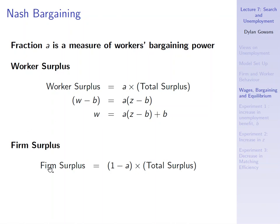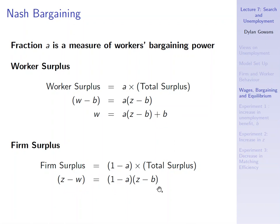For the firm surplus, it has to equal 1 minus A of total surplus, so Z minus W equals (1 minus A) times (Z minus B). We're going to substitute these Nash bargaining expressions into our earlier equations to get rid of W. W is endogenous in the model — it's determined by the exogenous parameters — and so we get rid of it by substituting in these values which are the results of Nash bargaining.